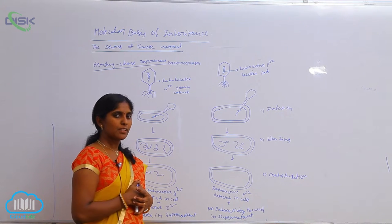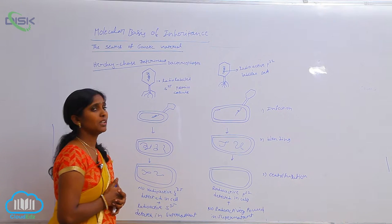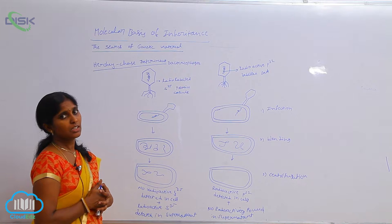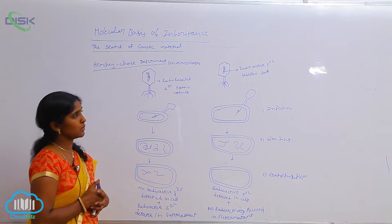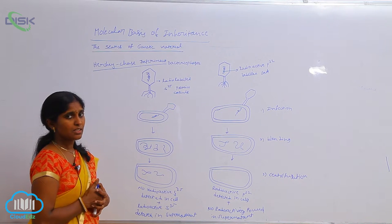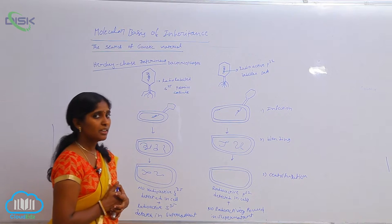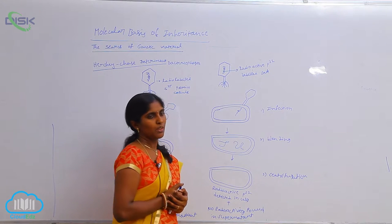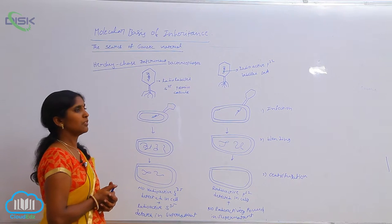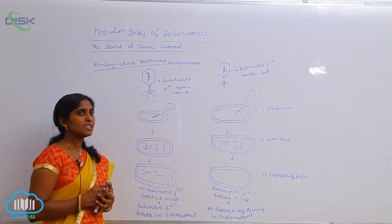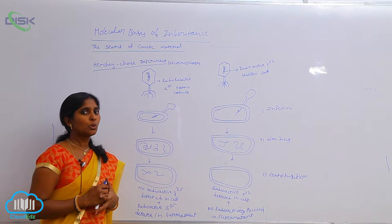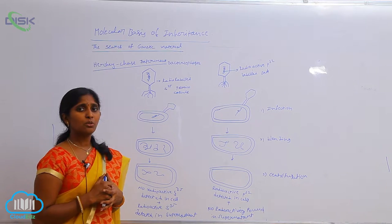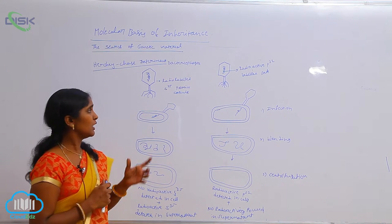Before going to the experiment, they cultured the T2 bacteriophages in different culture mediums separately. The first culture medium consists of radio-labeled S35 isotope. The bacteriophages are cultured there. When culturing separately using the two different isotopes, the S35 isotope is combined with the cell coat — the viral coat, the protein coat — and the protein coat is turned into the S35 radio-labeled protein coat.